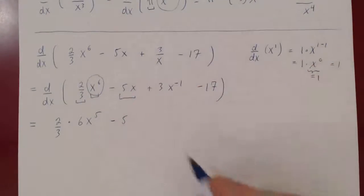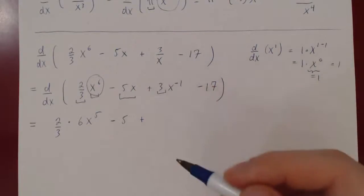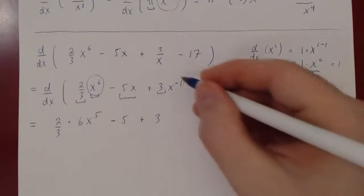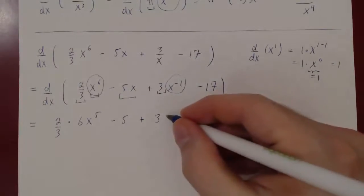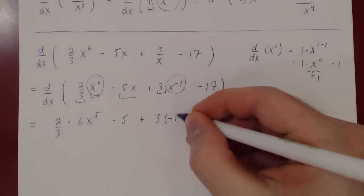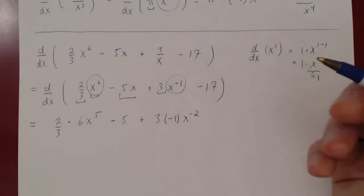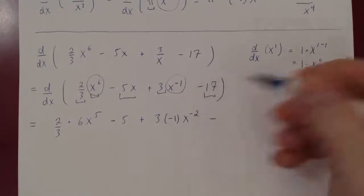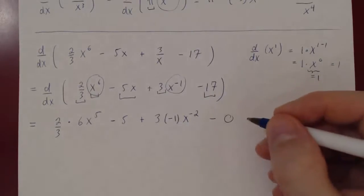For the third term, 3 is a constant multiple so 3 stays there, times the derivative of x to the negative 1. Applying the power rule, we bring down negative 1, giving 3 times negative 1 times x to the negative 2. Finally, the derivative of 17: 17 is a constant, it's just a horizontal line, the slope is 0, so the derivative is 0.